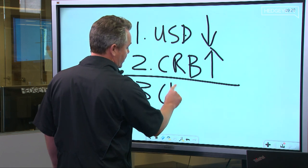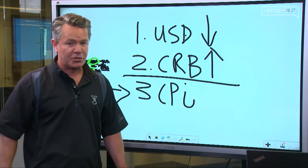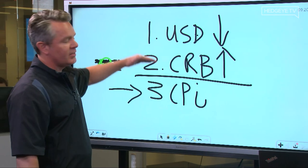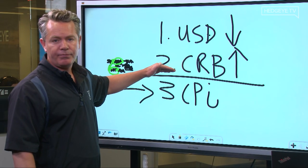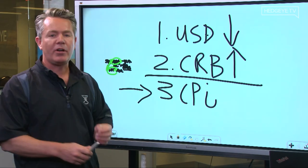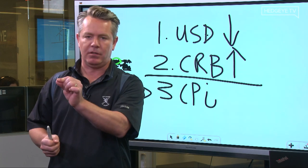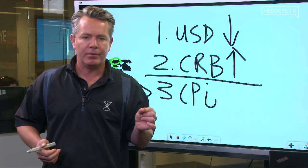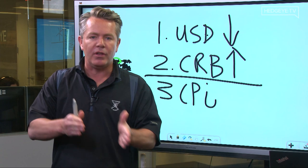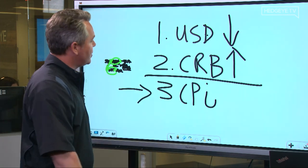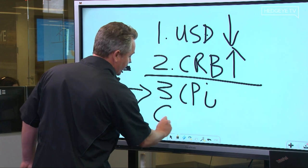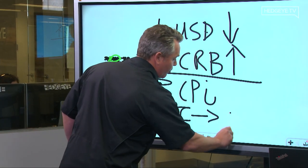This is why we call it the GIP model. I made that up. Growth, Inflation, Policy model. Because if I get growth and inflation right, the G and the I right, I'm front-running the policy move.